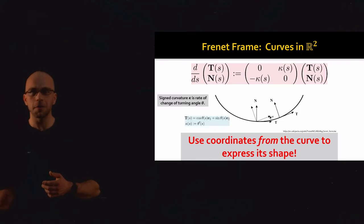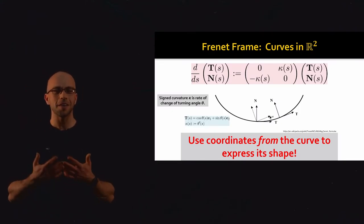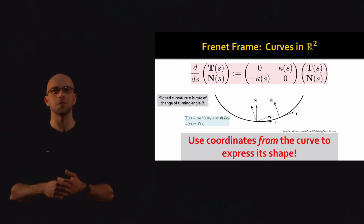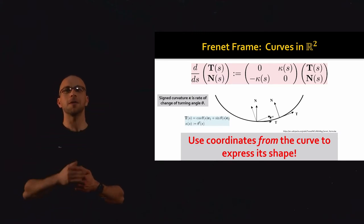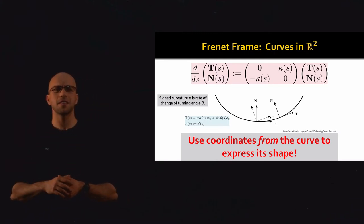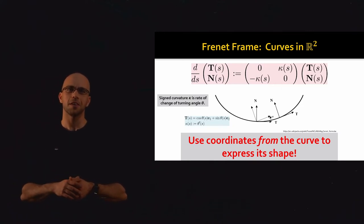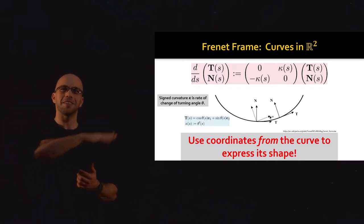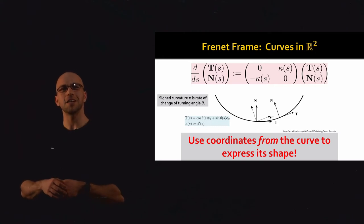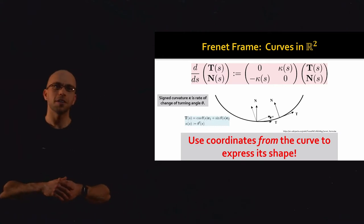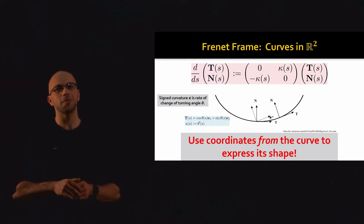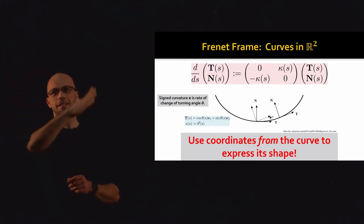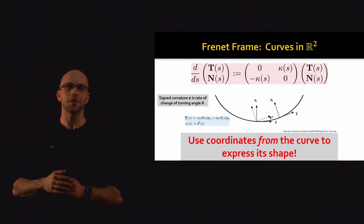Recall from our last lecture: we essentially derived an entire theory of discrete curves, both in two and three dimensions. In two dimensions, we defined the tangent and normal of a smooth curve, and showed that those are vectors associated with points along the curve rather than the parametrization. Even if I have a parametrization that drives along the curve at double speed, the tangent and normal vectors are the same. By differentiating the tangent with respect to arc length, we found the curvature weighted normal, kappa of S, which tells us how quickly the curve is bending as a function of arc length.